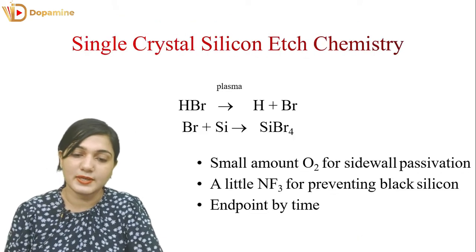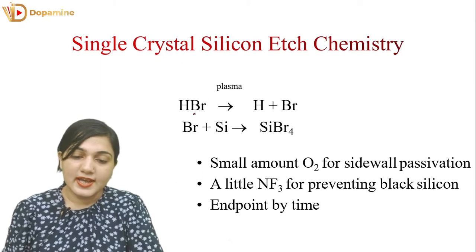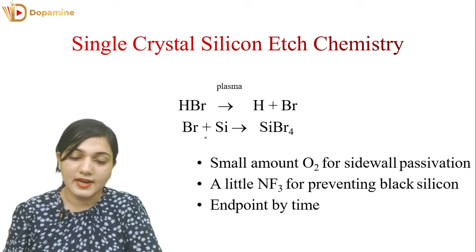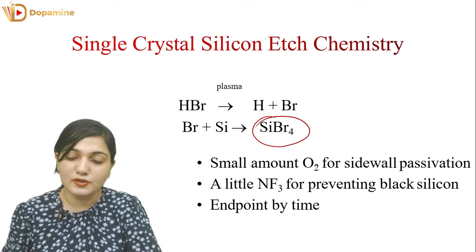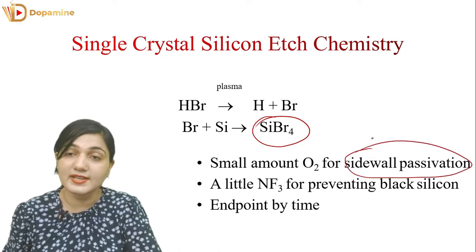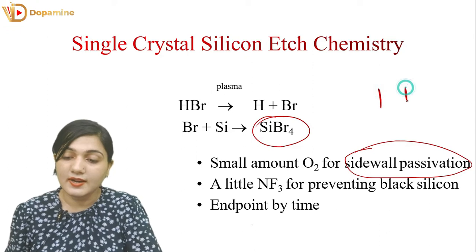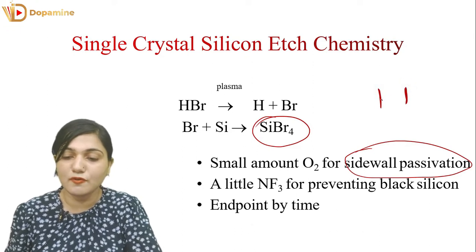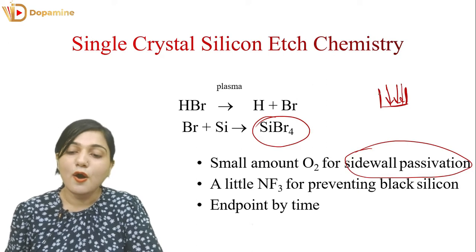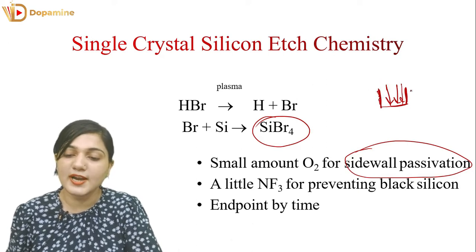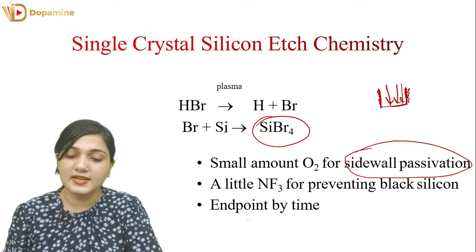What is the source of HBr? From HBr, we get H⁺ and Br. This is the bromine that reacts with silicon to make SiBr4. If we have a small amount of oxygen, it is used for sidewall passivation. If we don't protect the sidewall, we only etch in one direction — the downward direction. The oxygen forms oxide on the sidewalls, so bromine only reacts with the silicon below and not the sidewalls.